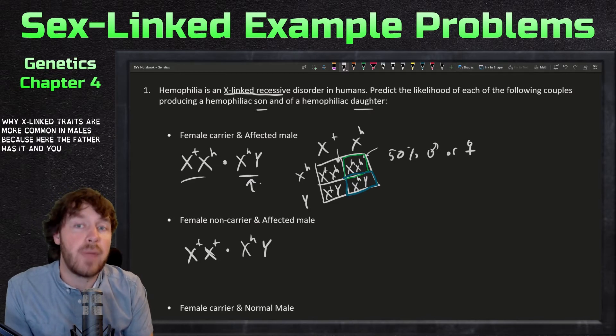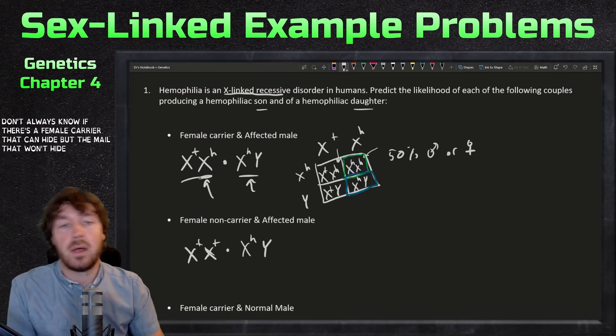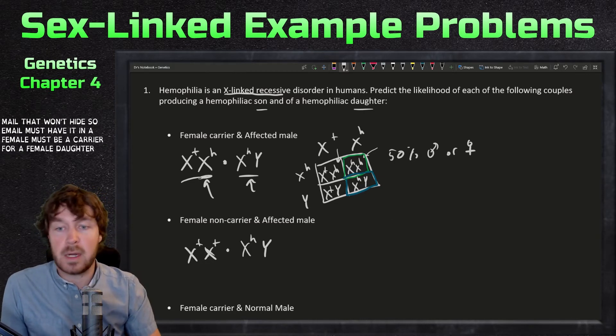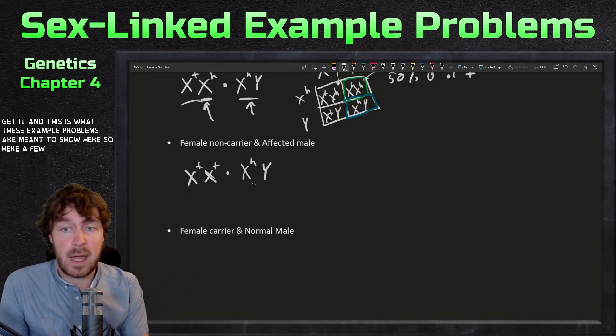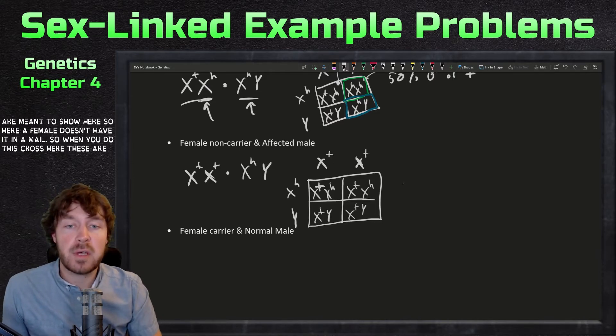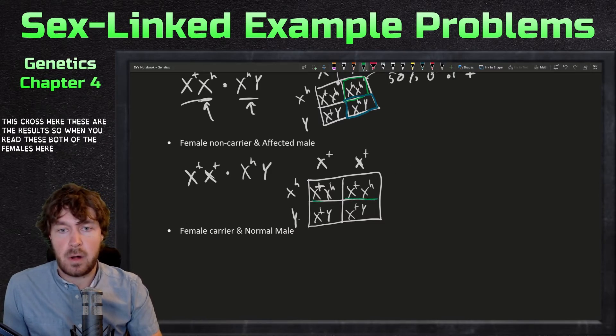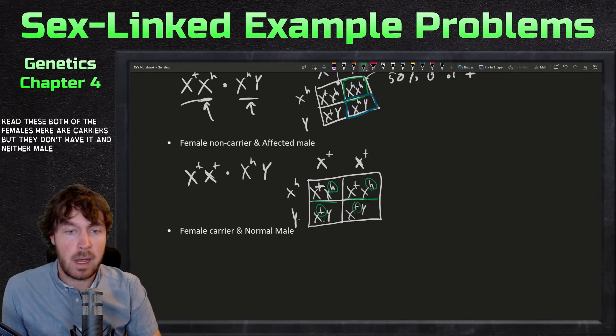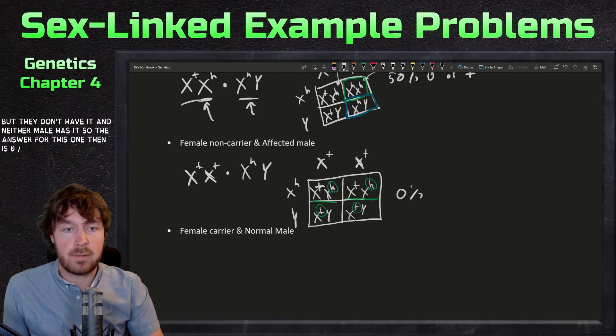That's why X-linked traits are more common in males, because here the father has it and you would know that beforehand. You don't always know if there's a female carrier; that could hide. But the male, that won't hide. A male must have it and the female must be a carrier for a female daughter to get it. This is what these example problems are meant to show. Here a female doesn't have it and a male does. When you do this cross, here are the results: both of the females here are carriers but they don't have it, and neither male has it.